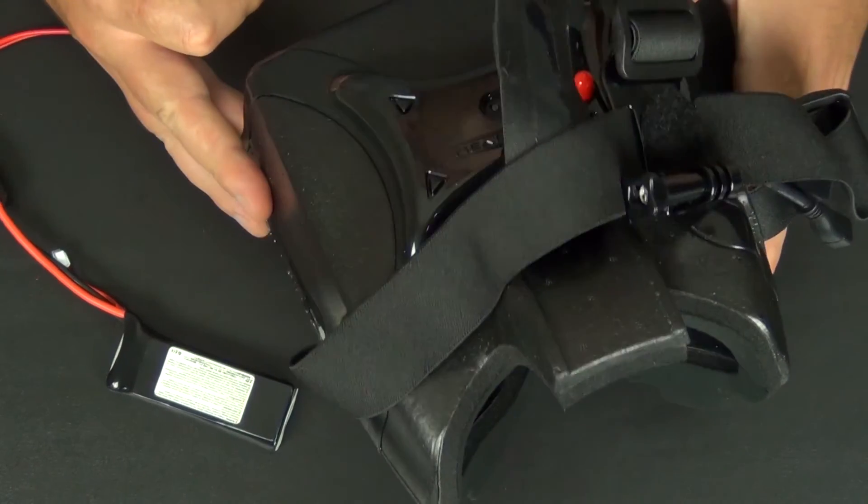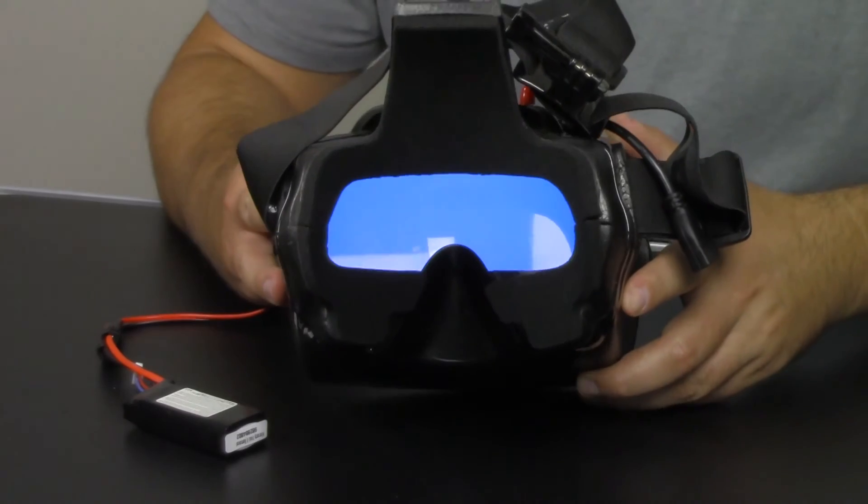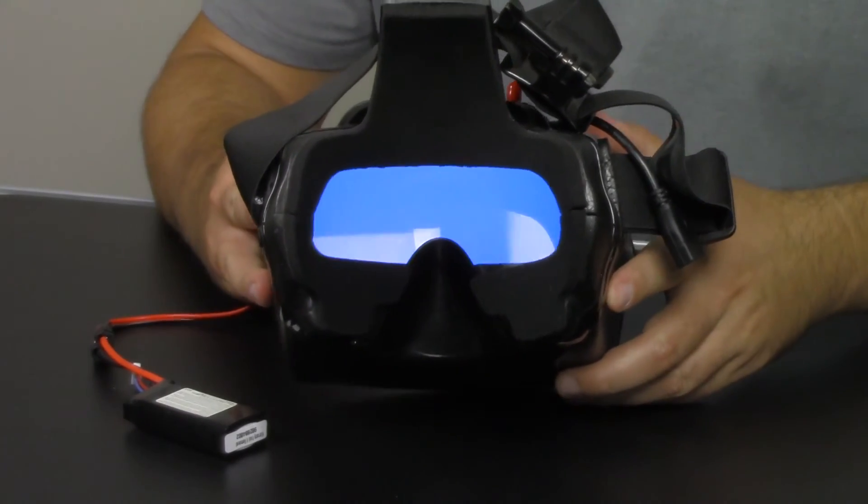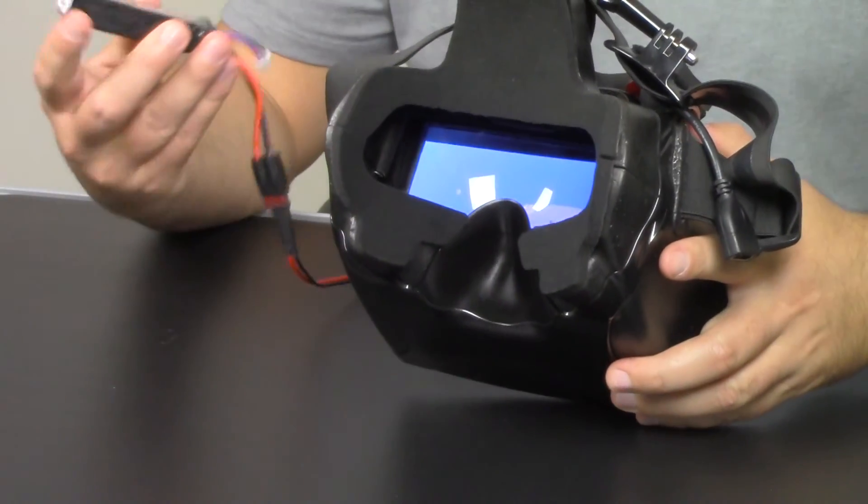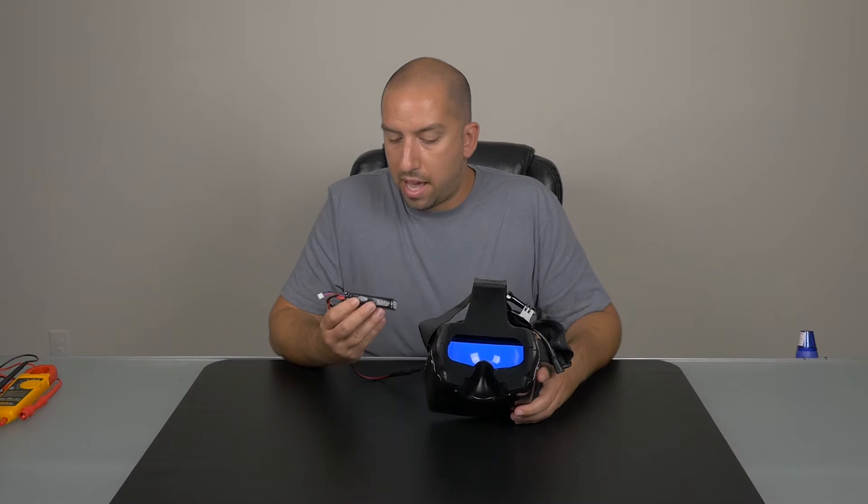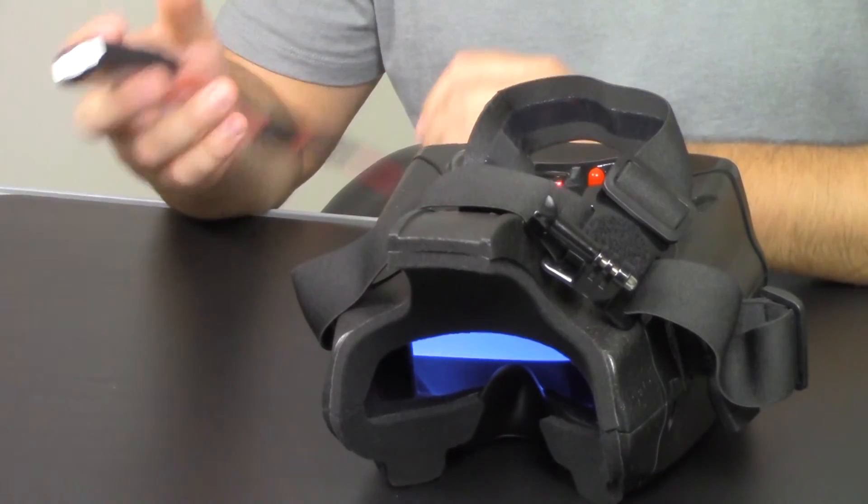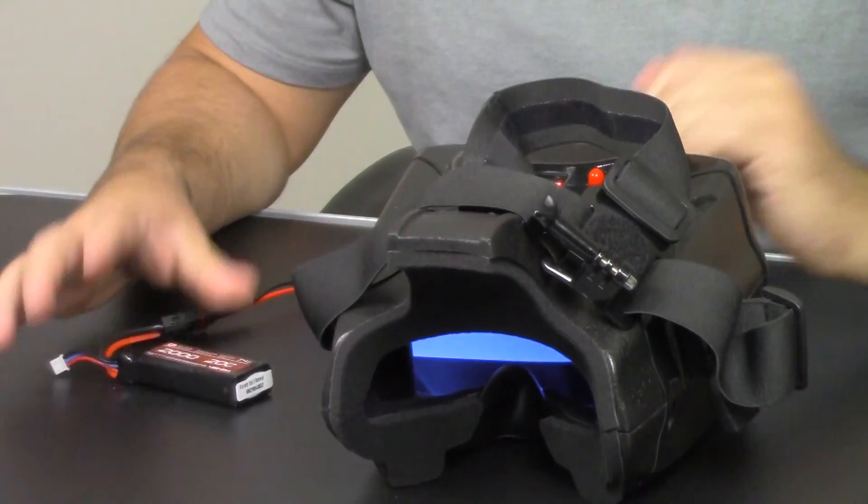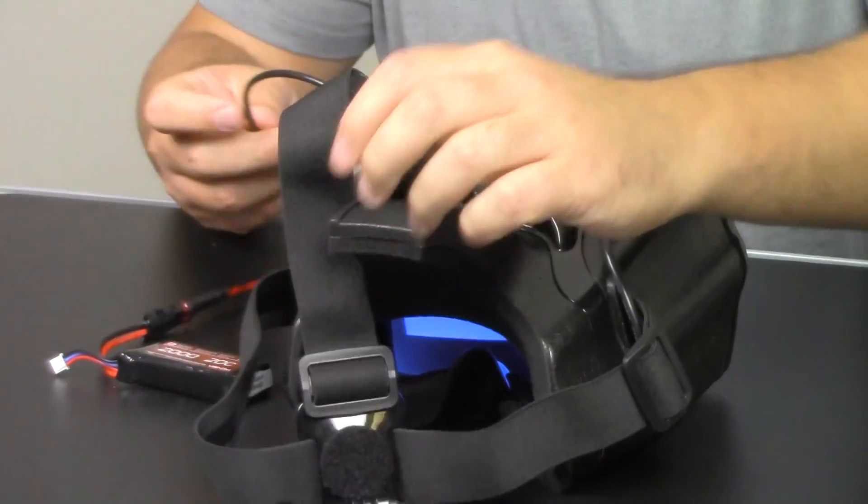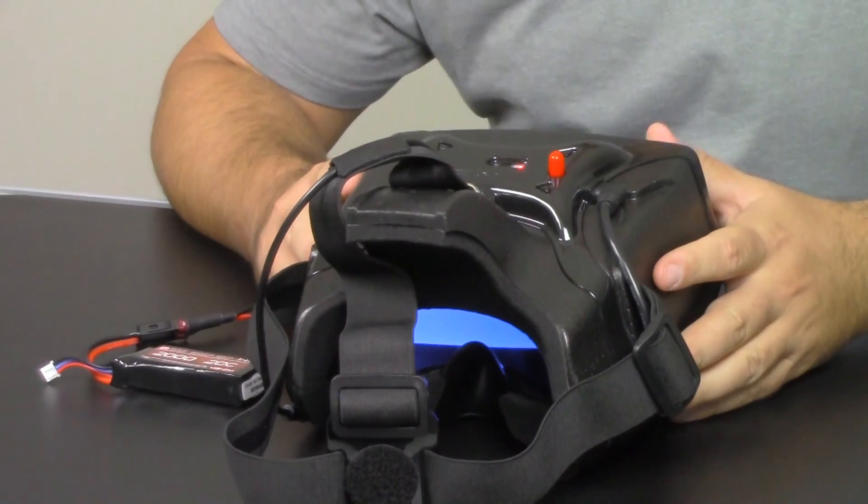Now for the moment of truth, we are going to plug in the Headplay unit and see if it powers on. There it is. Blue screen. That's what we want to see. We don't have any signal connected. So successful. We've officially attached a 2000 milliamp Venom battery, a LiPo battery. This is a 2S battery to the unit.